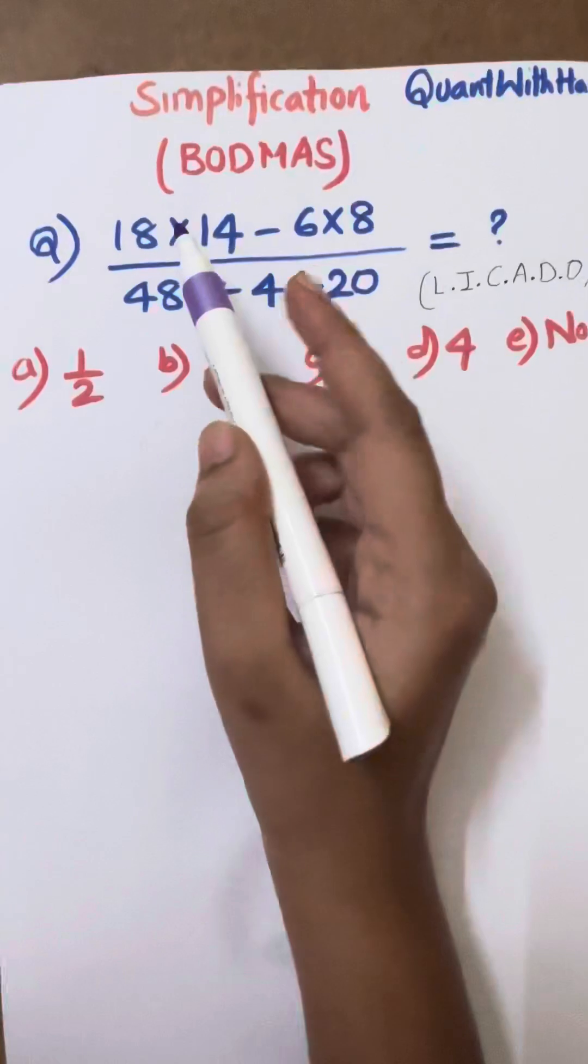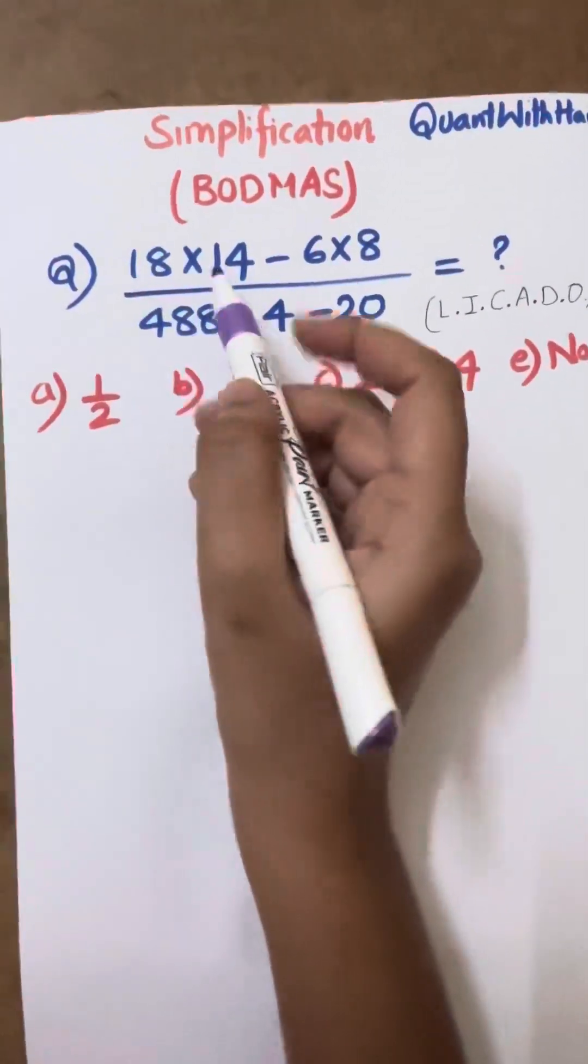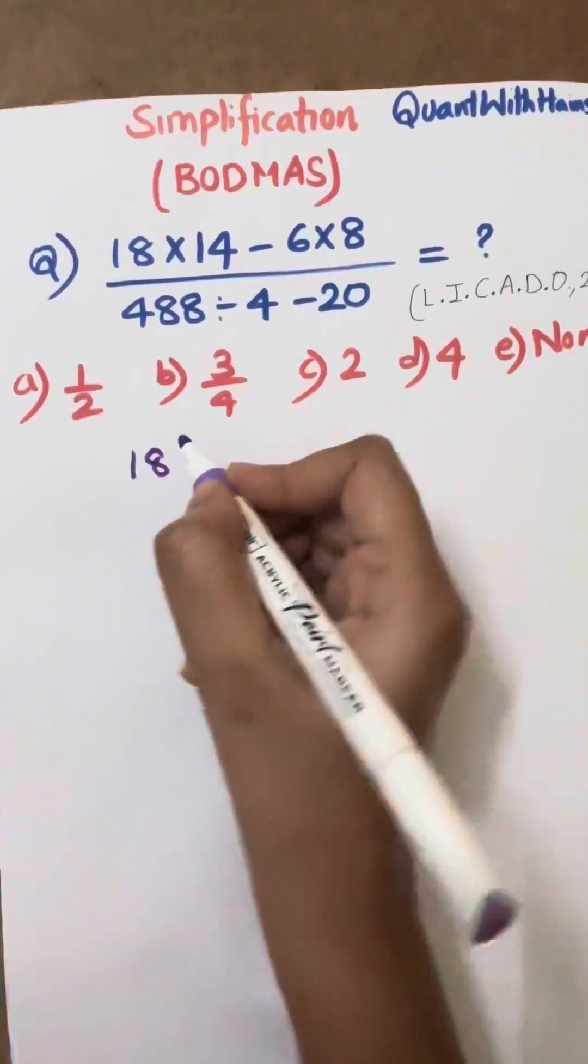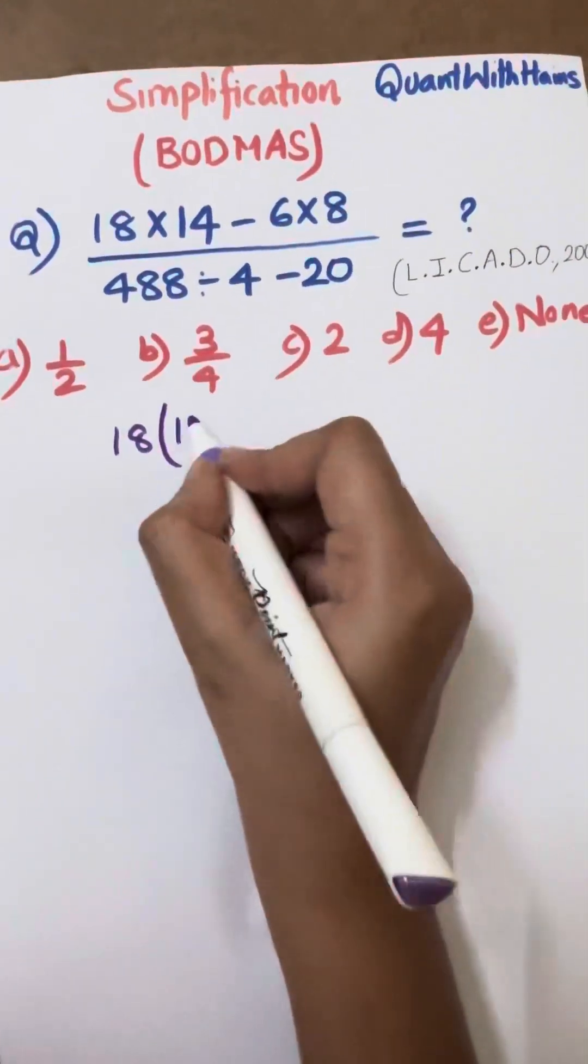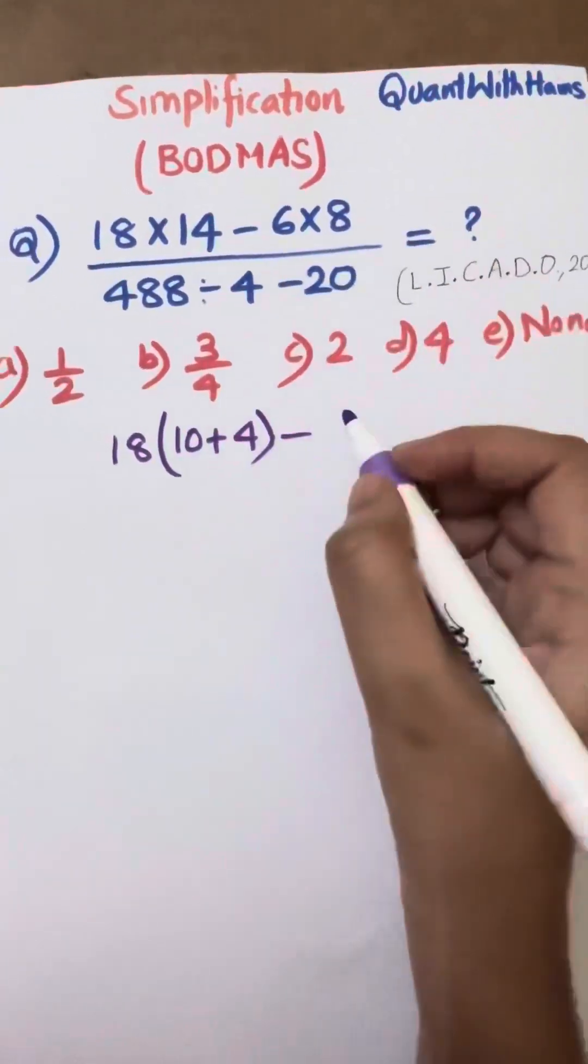So first we have to multiply, then we will subtract. So 18 into 14, we'll write 14 as 10 plus 4, minus 6 times 8 equals 48.